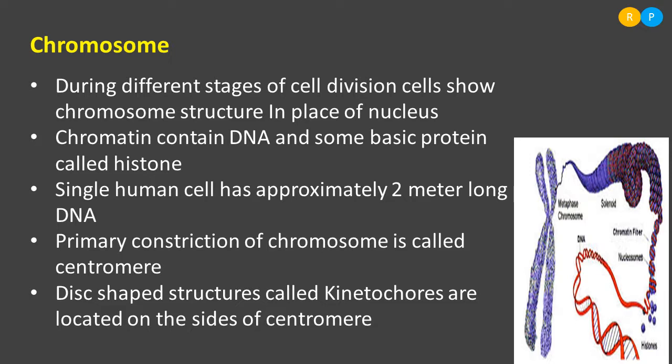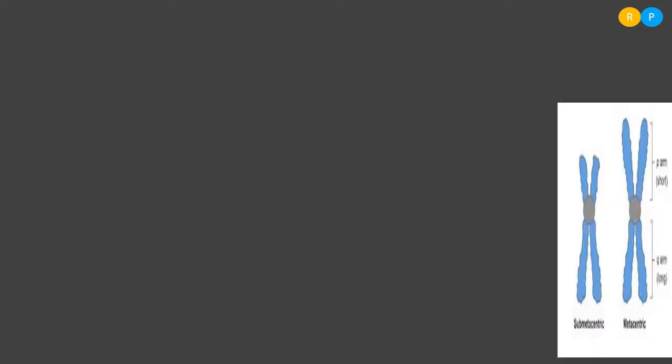So in the chromosome, the centromere is the primary constriction, and it holds the arms of the chromosome. There are two arms present, and each arm consists of highly coiled chromatin that contains DNA and some basic histone protein.